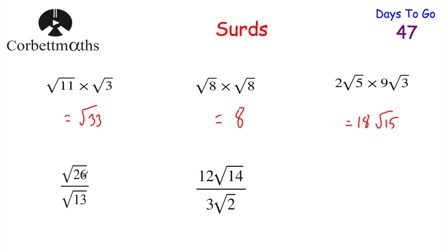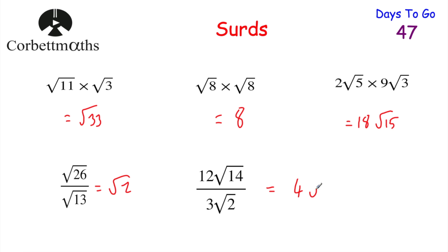Next, root 26 divided by root 13: 26 divided by 13 is 2, so that'd be equal to root 2. And finally, 12 root 14 divided by 3 root 2: 12 divided by 3 is 4, and root 14 divided by root 2 is root 7 because 14 divided by 2 is 7, so the answer is 4 root 7. Well done if you got those.